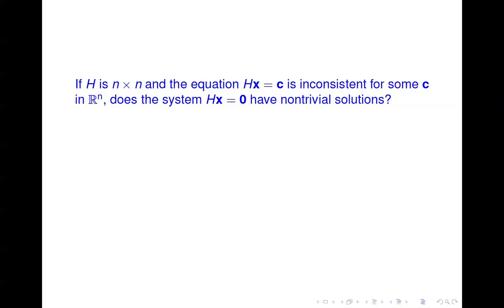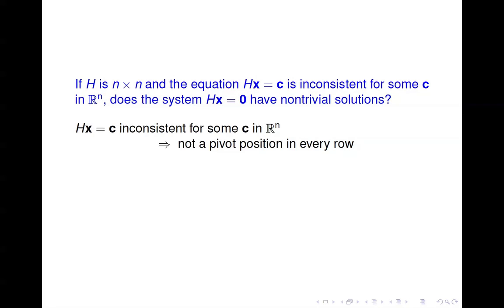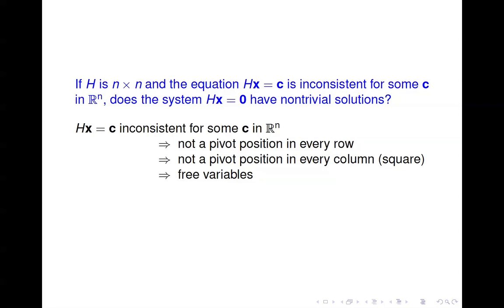Next: suppose H is n-by-n and the equation Hx = c is inconsistent for some c. Does the system Hx = 0 have non-trivial solutions? If Hx = c is inconsistent for some right-hand side, then there can't be a pivot position in every row. Since H is square, that means there can't be a pivot position in every column either, which means there are free variables — and hence there are non-trivial solutions to Hx = 0.